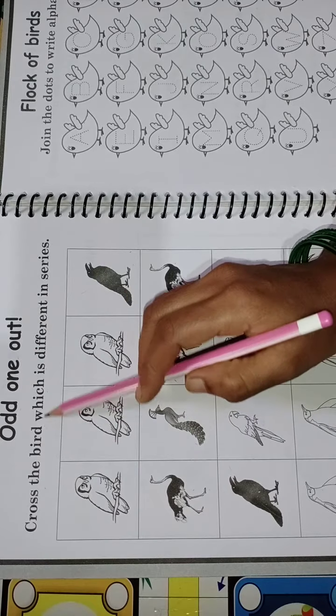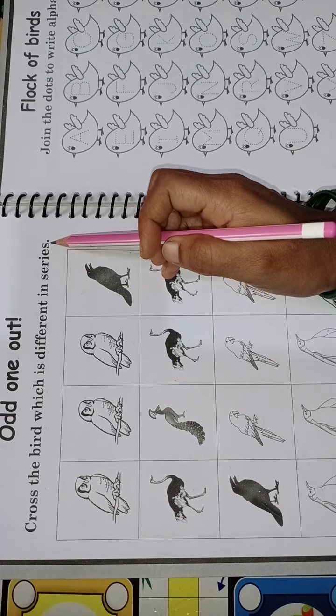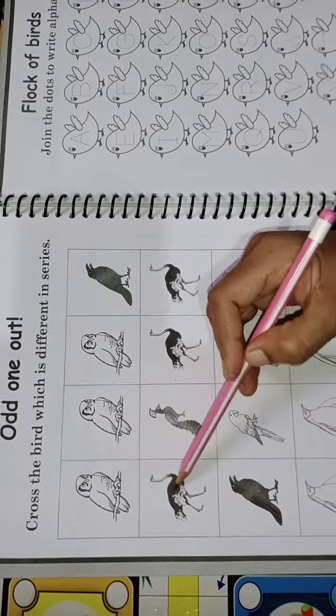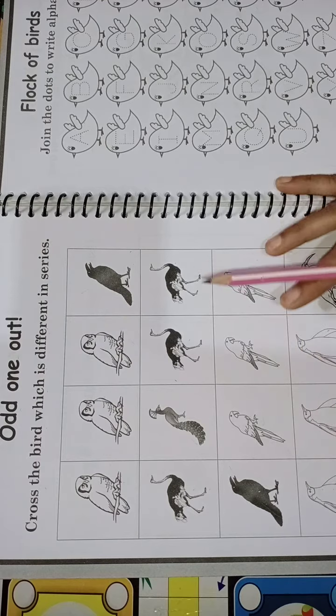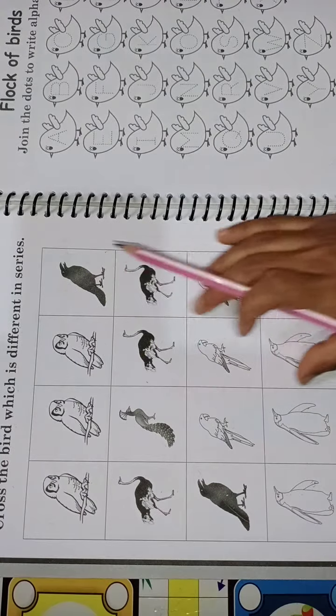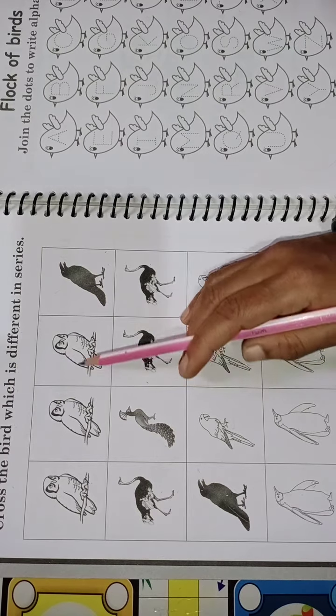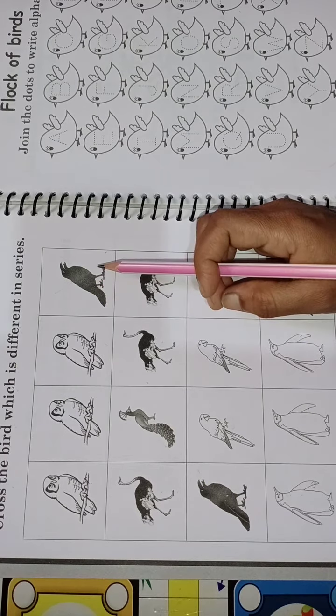Cross the bird which is different in each series. There are four series here: one, two, three, four, and a few pictures of birds here. Today we will recognize the different birds in a series and then cross them.